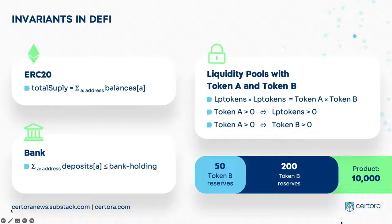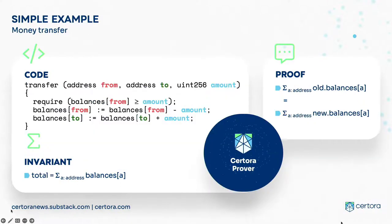You can think of our tool as a very expensive, very precise QA tool. For example, for a transfer function, you require that you have enough money, and we show that the sum of balances remains the same — the total value remains the same. This is the kind of property or invariant you can prove with our tool.